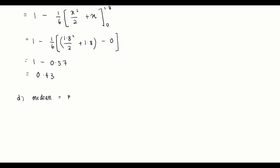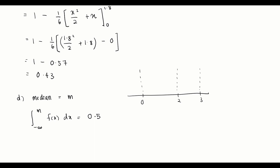For part (d), we find the median m. The formula is to integrate from negative infinity to m and set it equal to 0.5. Since there are two intervals (0 to 2, and 2 to 3), m could fall in either interval, so we have two possibilities to consider.